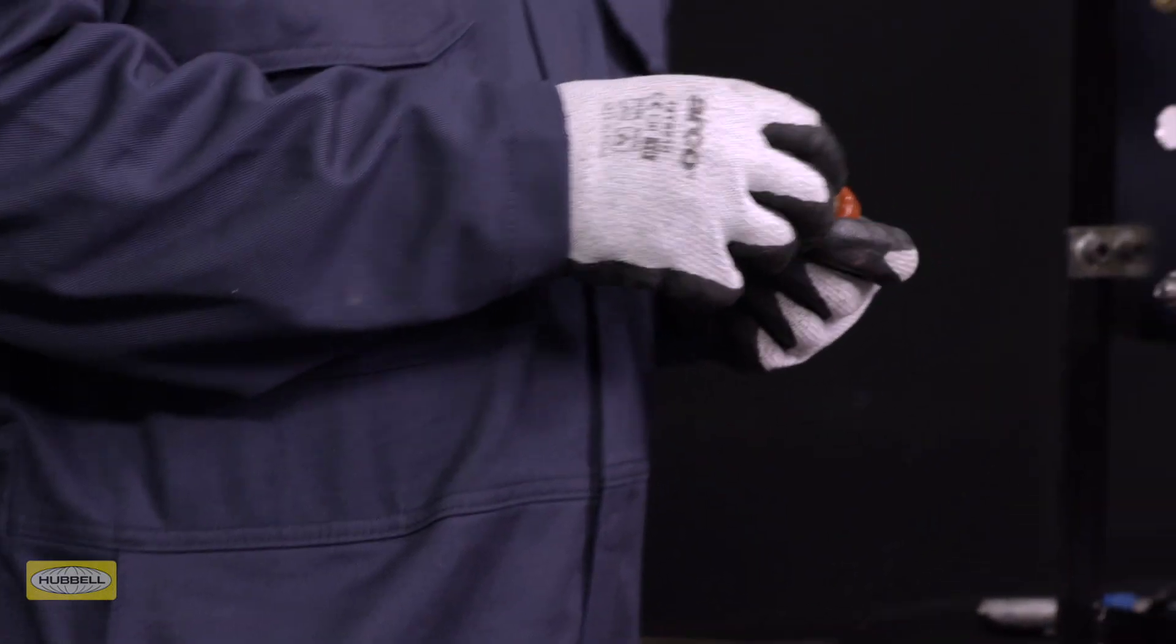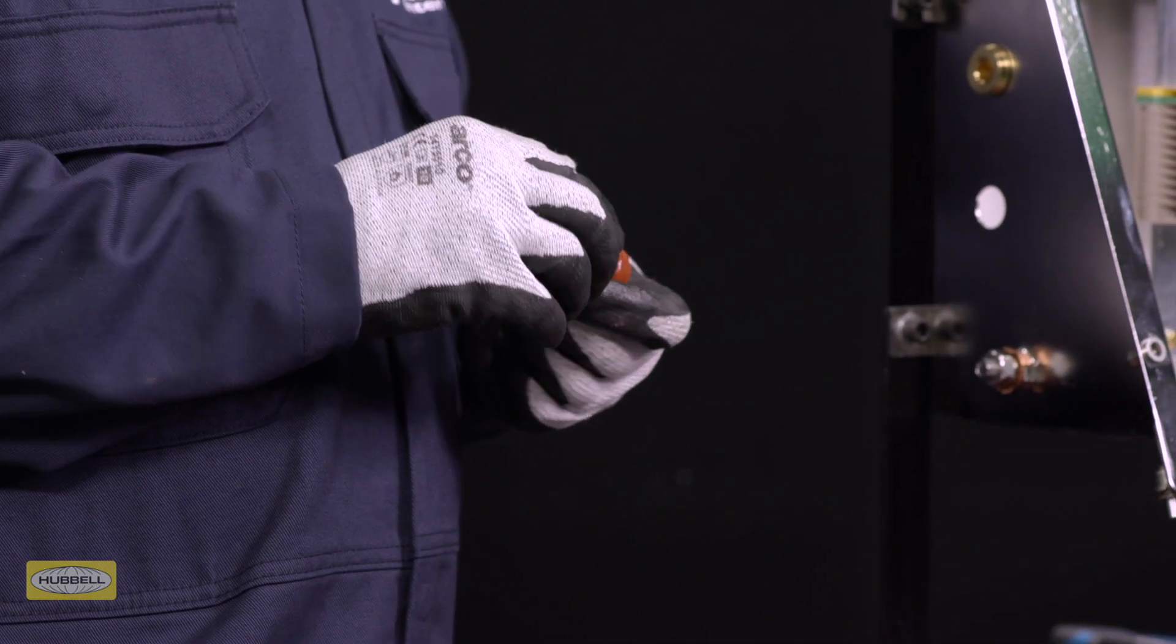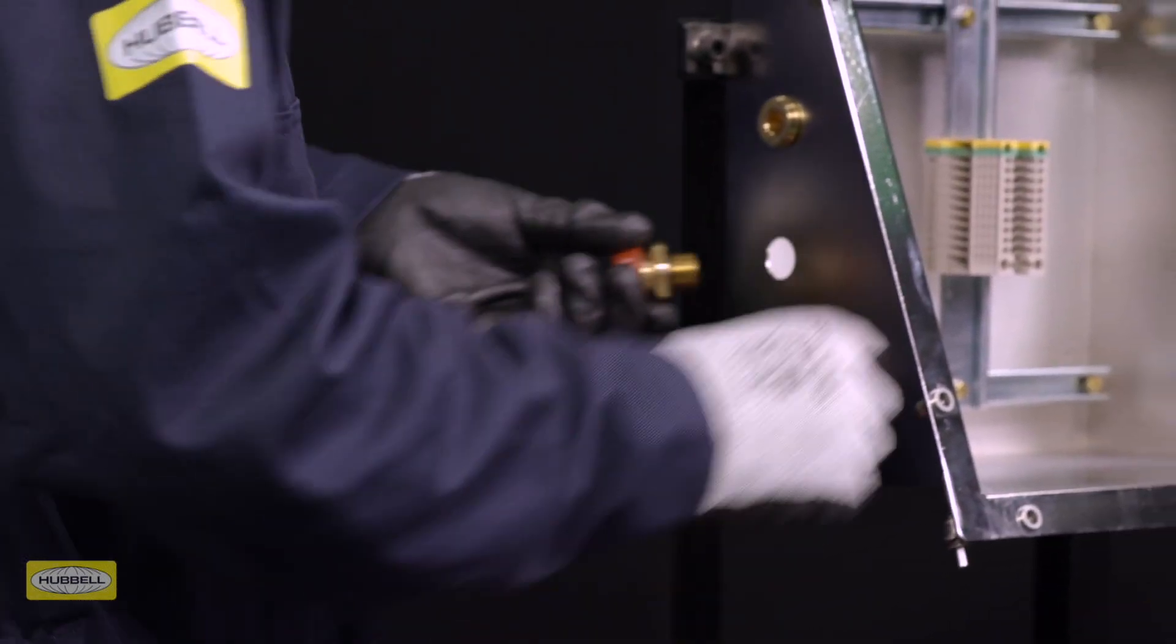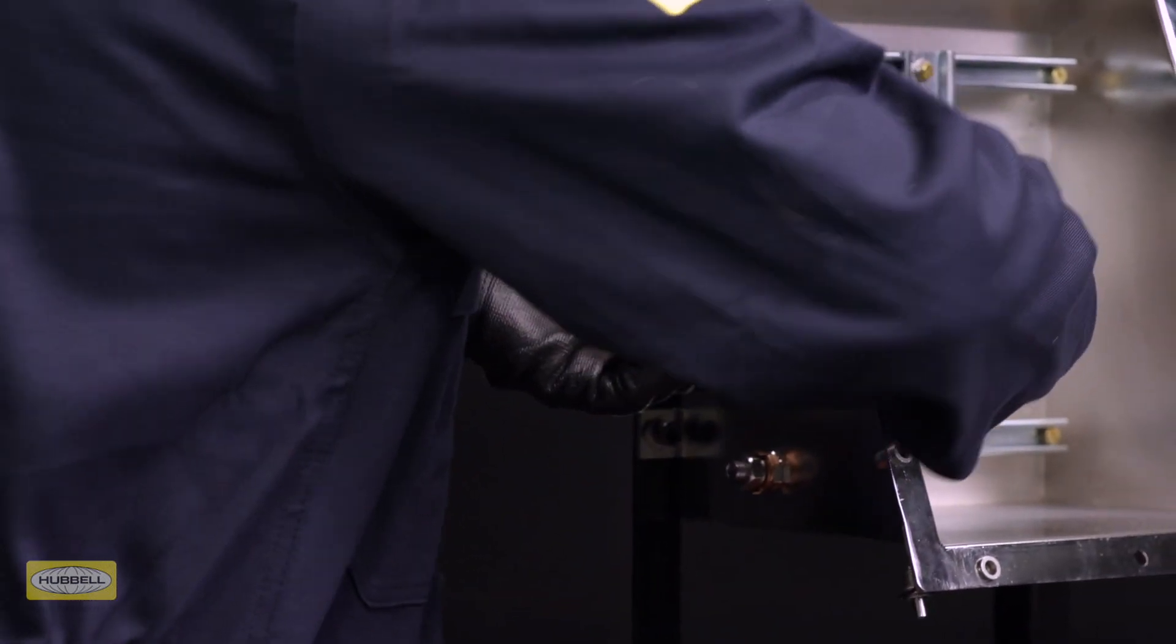Now that potting is complete, use a wrench to fit the entry into the enclosure. If required, fit the appropriate IP washer onto the entry thread.